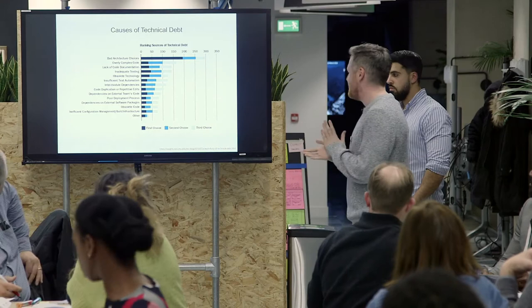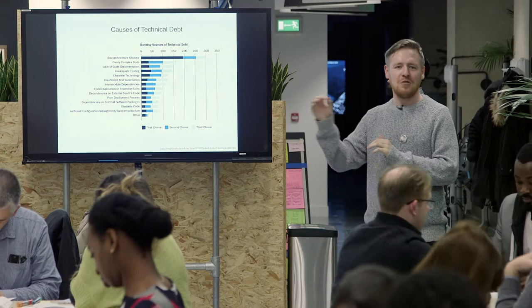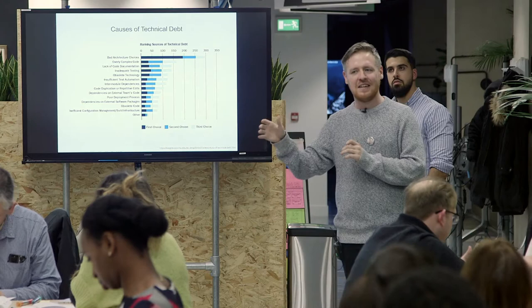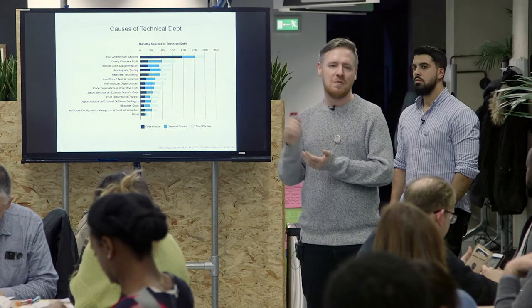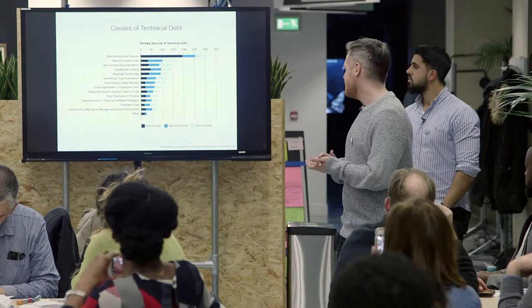Bad architectural choices: when you talk about bad architectural choices, nobody ever really makes a bad choice intentionally. You make a choice, then you learn something in the future and that choice turns out to have been the wrong one. But nobody ever sat aside and said 'I'm going to make a really bad choice' — you just didn't have all the information you had afterwards. It's just learning cycles.